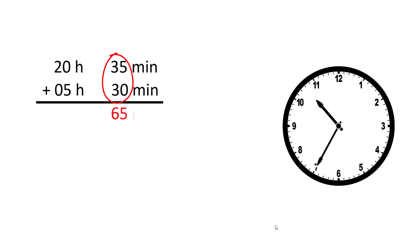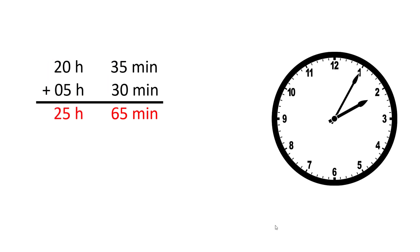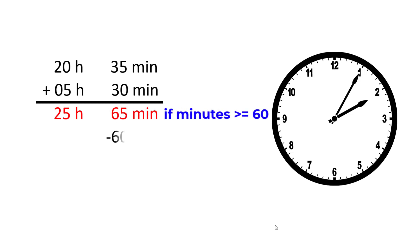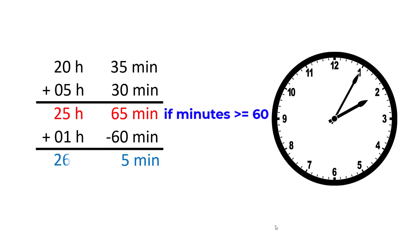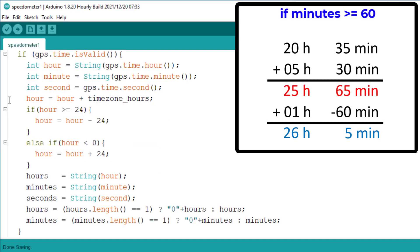We begin by adding the minutes: 35 plus 30 is 65 minutes. Then we add the hours: 20 plus 5 is 25. Now we have 25 hours and 65 minutes, which is not a valid time. The minutes must be less than 60, since there are 60 minutes in an hour. So if the minutes are 60 or more, we subtract 60 from the minutes and add 1 to the hours. Now we have 26 hours and 5 minutes — the minutes are fixed. The hours are also invalid, but we have already fixed that in the code, so we only need to write code to fix the minutes offset.